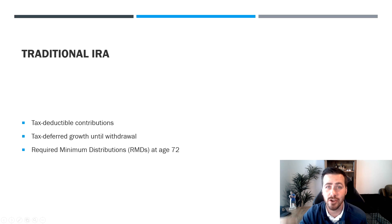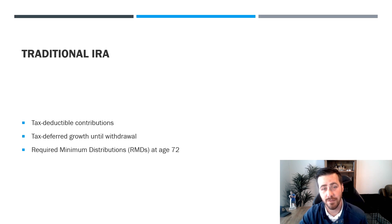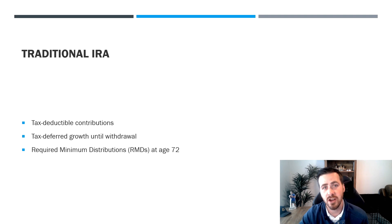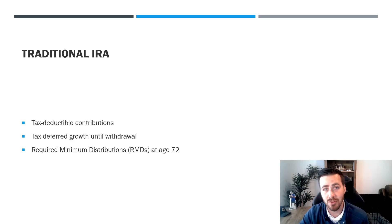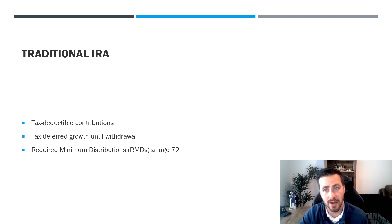A traditional IRA is where you get tax deductions on your contributions. If you do this through your employer it might be called a 401k, 403b, or deferred comp — there are tons of different titles for it. When you make a traditional IRA contribution you get the tax deduction on your tax return. With a 401k you automatically get the deduction — so if you save $100, in reality you might only miss $75 out of your paycheck because it's pre-tax. It's tax-deferred growth until you withdraw it, and typically you can't take that withdrawal until age 59½.